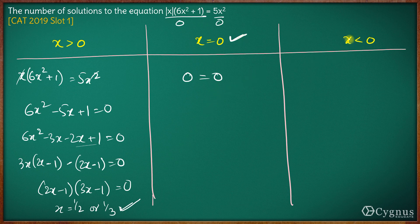And finally, if x is less than 0, mod of x will be minus x. So minus x times (6x² + 1) equals 5x².